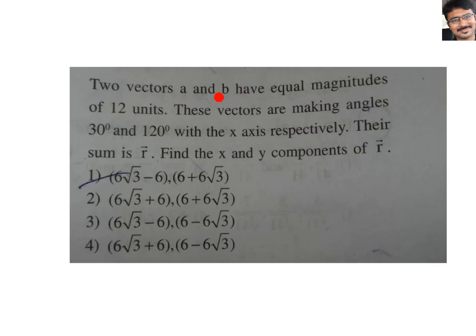There are two vectors A and B having equal magnitudes of 12 units. These vectors are making angles 30 degrees and 120 degrees with respect to the x-axis respectively. That means A is making 30 degrees with the x-axis, and B is making 120 degrees with the x-axis. Their sum is R bar, the resultant. Find the x and y components of R bar.